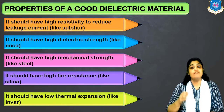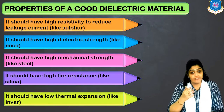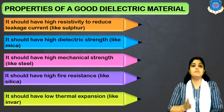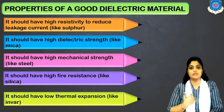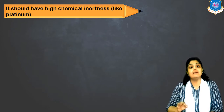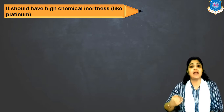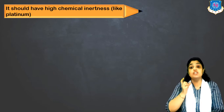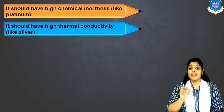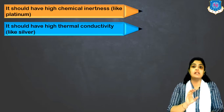The next property is low thermal expansion — like invar. If a material has very high thermal expansion, it expands and can lead to breakdown. So it should have low thermal expansion and high thermal stability. The next property for a good dielectric is high chemical inertness — like platinum, which is a highly chemically inert material. Your dielectric material should be highly chemically inert.